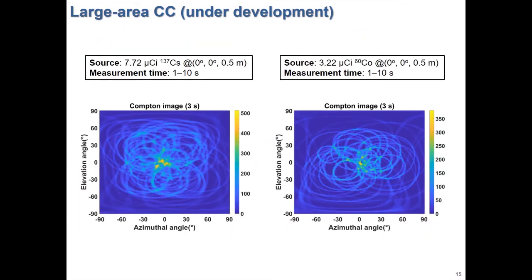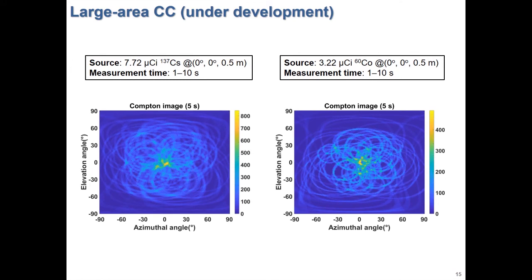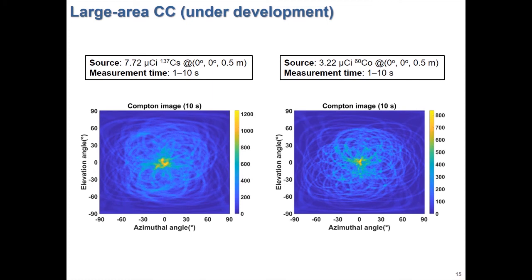This is the Compton image obtained by the LACC. We can get the image within just below a few seconds for radiation sources 50 cm away from the LACC.